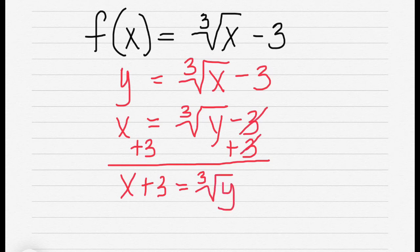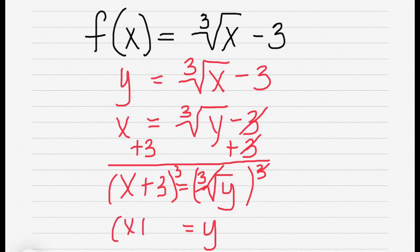We're going to cube both sides, so this is going to get rid of the cubed root. I'm left with y = (x + 3)³. To write it in inverse notation, we would have